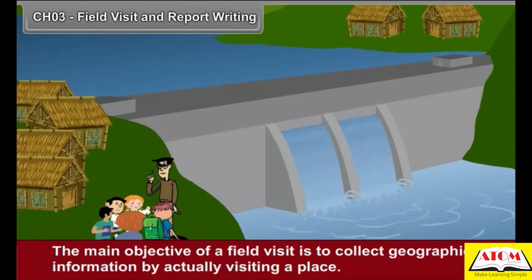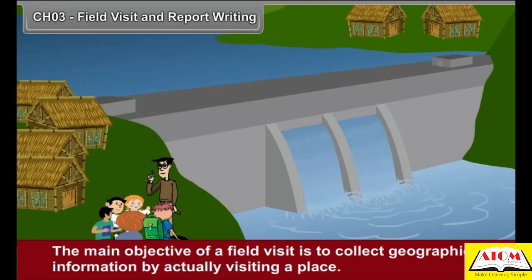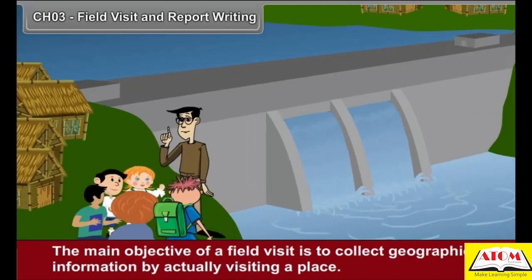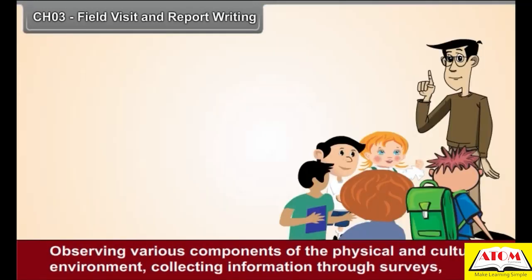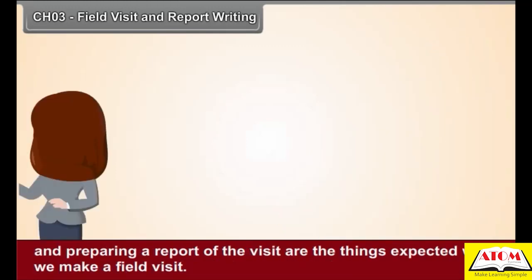Chapter 3: Field Visit and Report Writing. The main objective of a field visit is to collect geographical information by actually visiting a place. Observing various components of the physical and cultural environment, collecting information through surveys, and preparing a report of this visit are the things expected when we make a field visit. In this chapter, let us try to understand how to study these components when we visit a village.